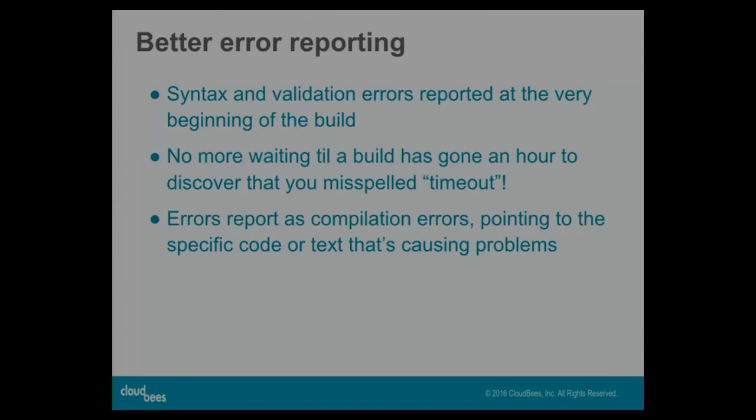Declarative does syntax and validation checking before actually executing the build — at the very beginning of the build. It goes through and makes sure the syntax looks right, makes sure we've got the right types on all of our steps, and makes sure we're not doing something completely wrong. It errors out at that very beginning of the build with errors reported as compilation errors, pointing to exactly where the error was.